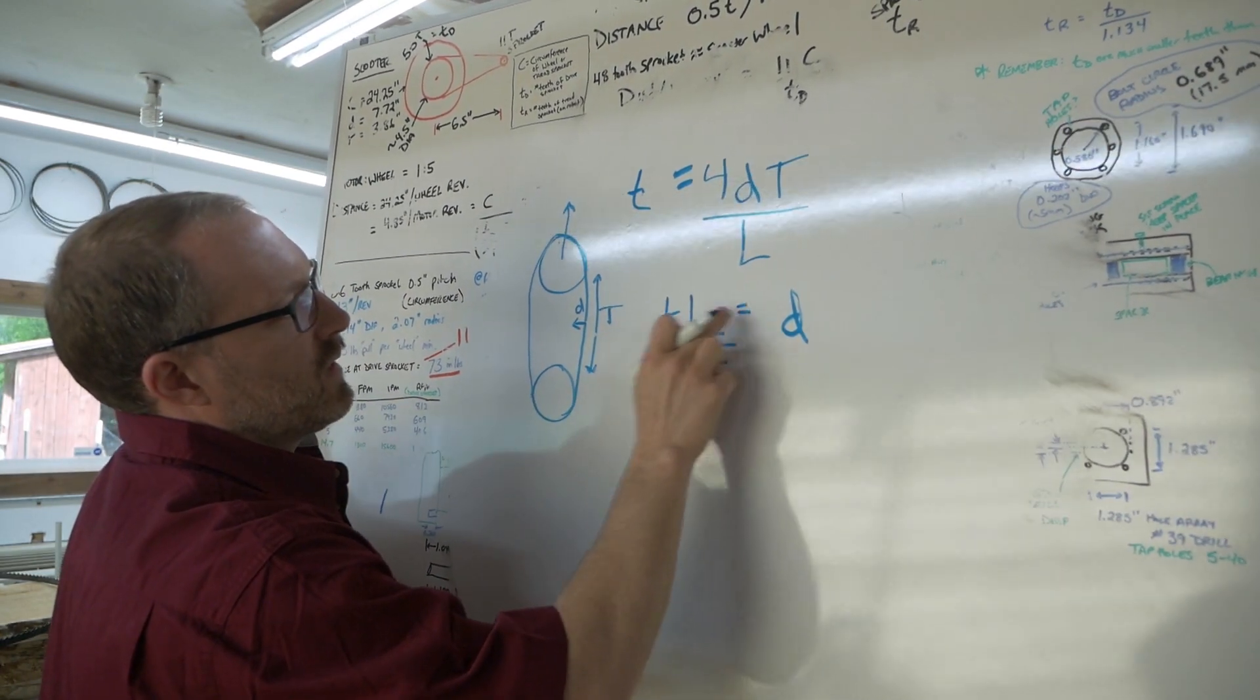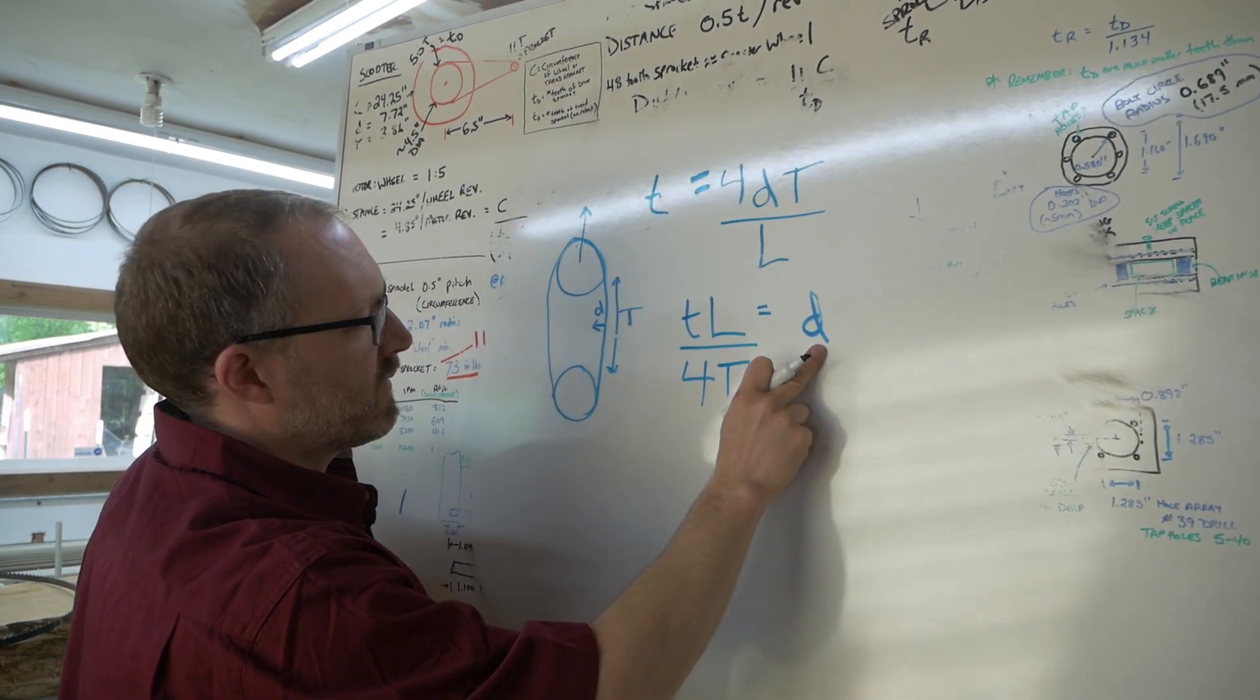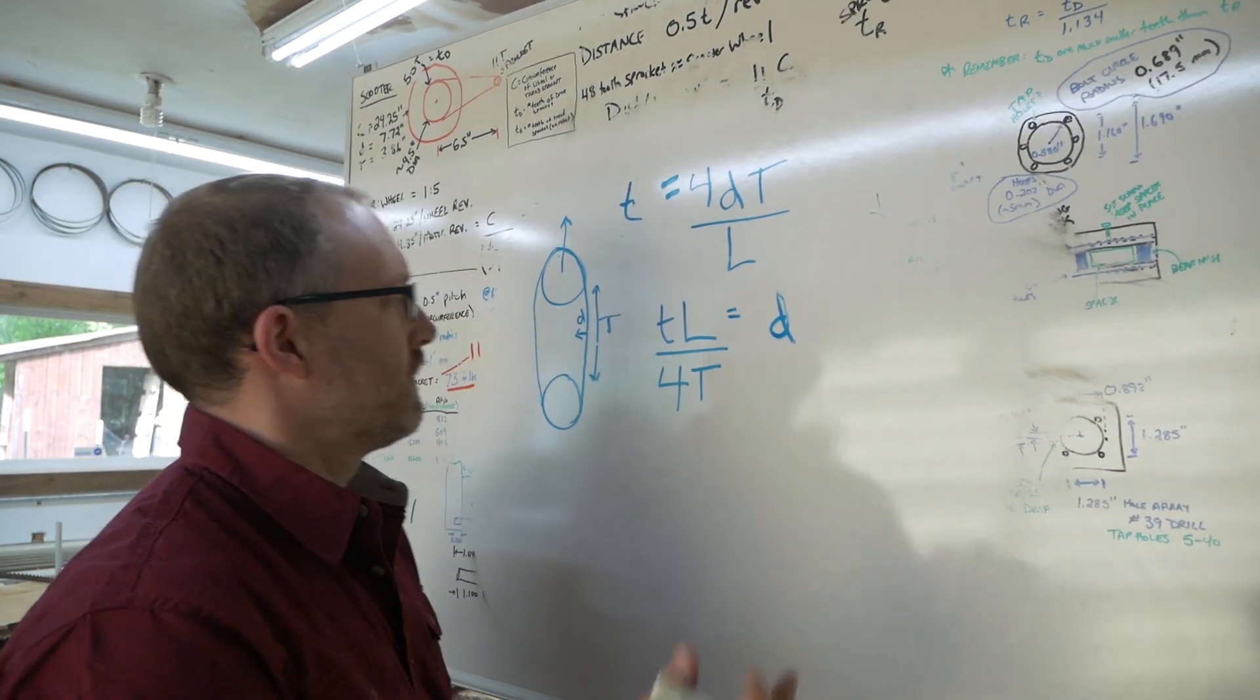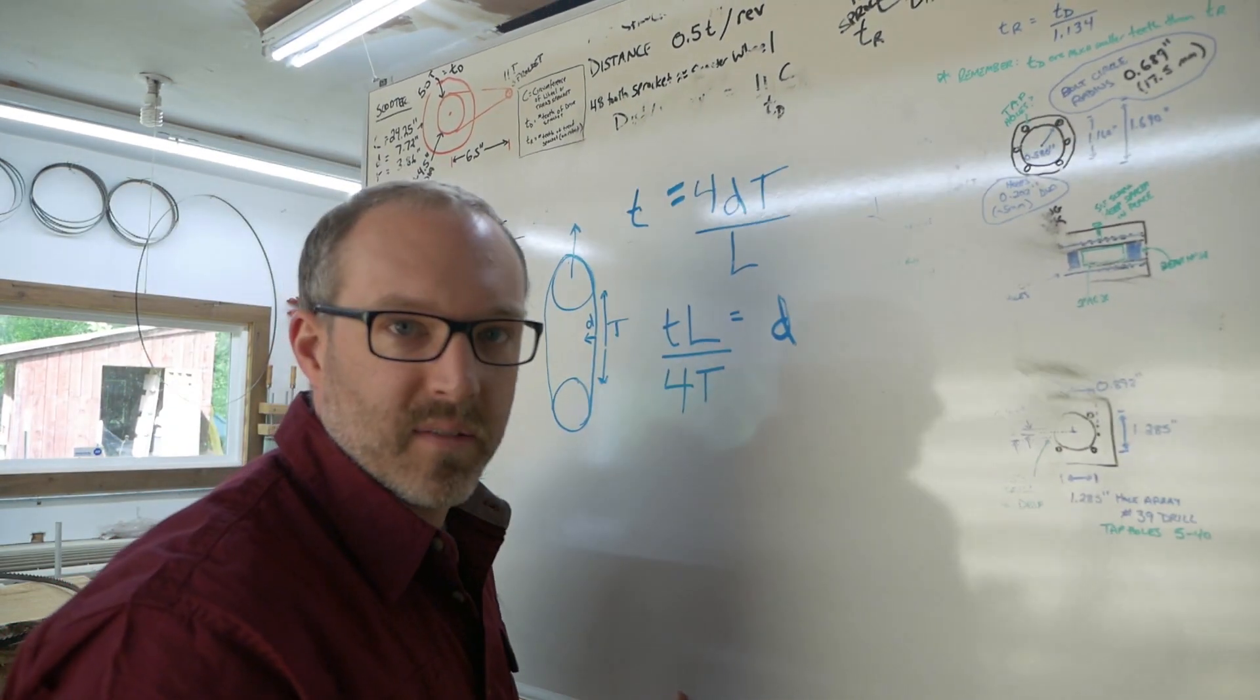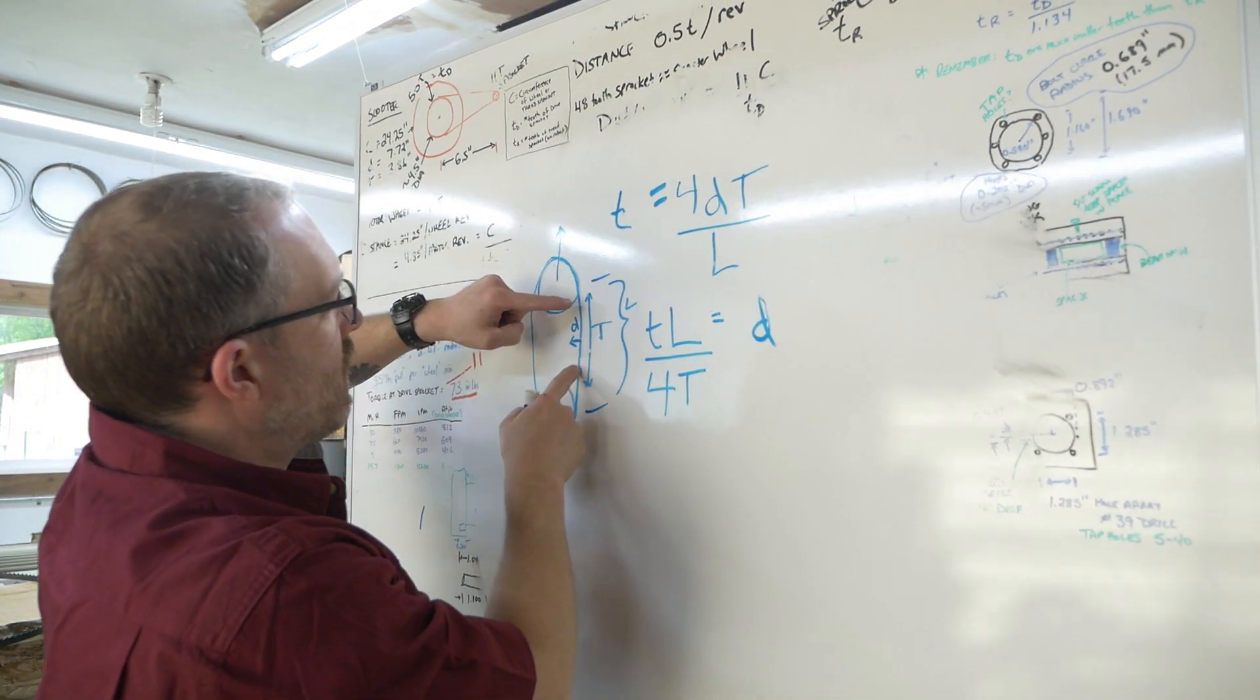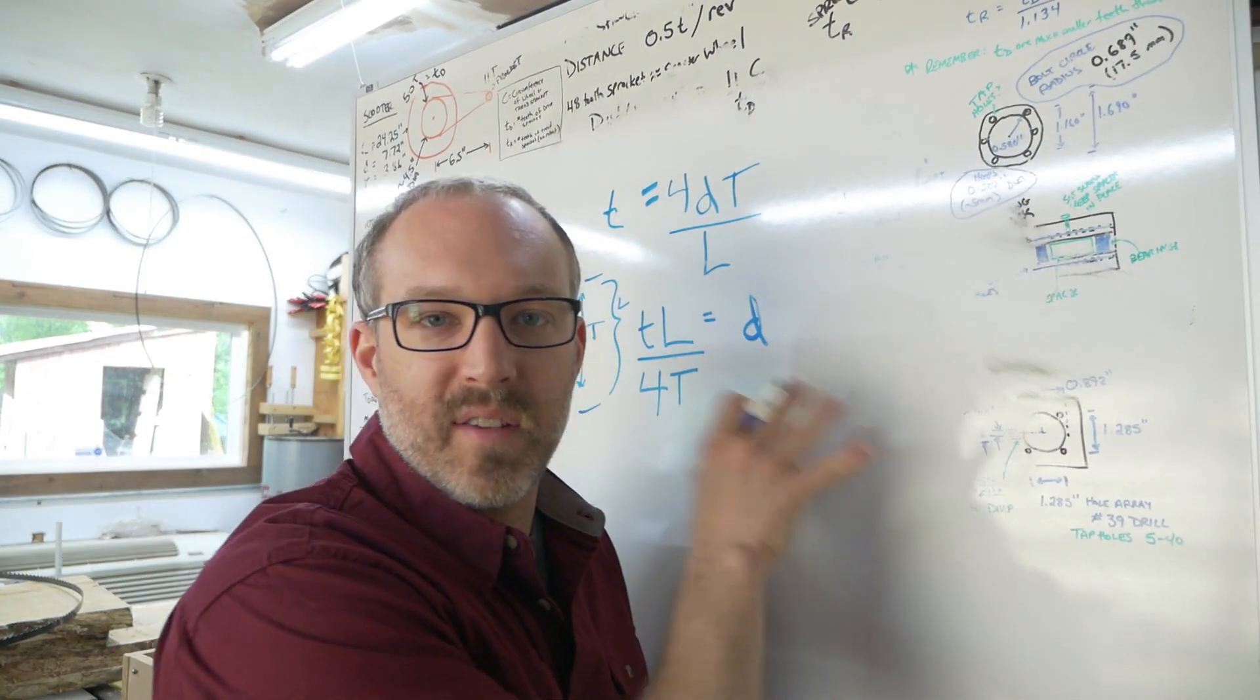So then we're left with D is directly proportional to little t L divided by 4T. And if you remember algebra, that basically means that these things are linearly proportional and this is inversely proportional. Meaning, if you increase little t, little d increases. If you increase big T, little d decreases. So what is this telling us? If T gets bigger, if we put more tension on the blade, it'll deflect less. No duh. If the side force we're pushing on it is less, it'll deflect less. If the length, so here's the length right here. If we shorten the distance here of the blade and support it closer, the deflection decreases. We know all this already, right?